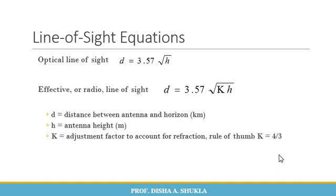Based on this, ground wave propagation is used when you want to transmit data for a short distance. Line of sight can be used for middle-range distances, but the height of the antenna must be defined accordingly. Sky wave propagation is used when you want to send data over a large distance. I hope the propagation modes of electromagnetic waves are clear. If you have any queries, you can contact me. Until then, keep learning.